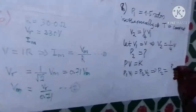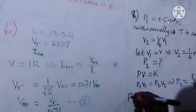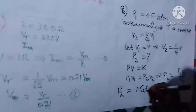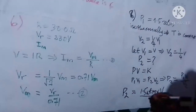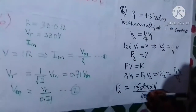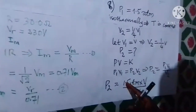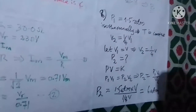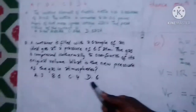Making P2 the subject: P2 equals P1V1 divided by V2. This gives P2 equals 1.5 atmosphere times V divided by (one-fourth V). V cancels, leaving 1.5 times 4, which gives us 6 atmospheres. So our correct answer is C.